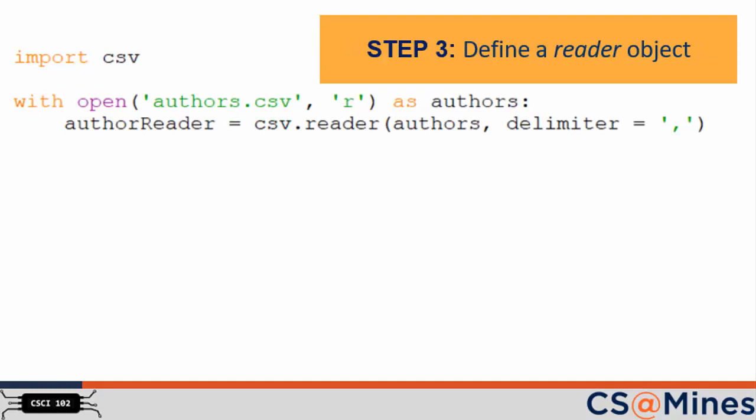Step 3: define a reader object for the CSV file. We define this reader object via the function csv.reader. Notice how we pass in the file handle for the file — `authors` in our example — as well as a delimiter for the CSV file, which is a comma. This CSV reader object will then parse the CSV file for us.